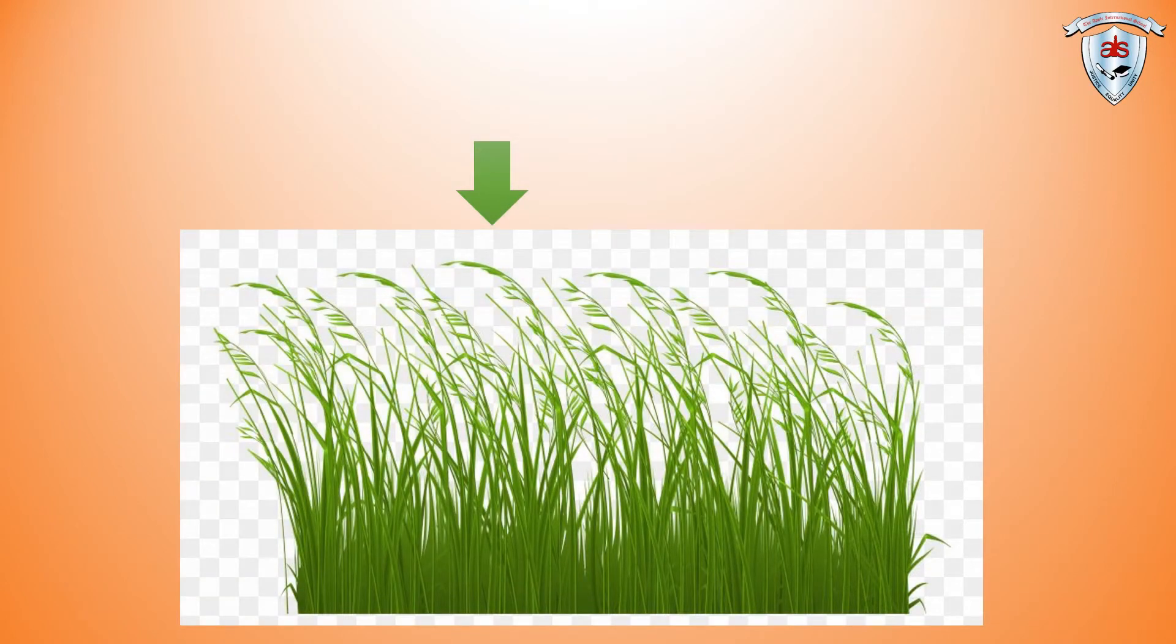Look at this picture, children. Can you tell me what is the name of this picture? Yes, you're right. It is grass. What is the beginning sound of grass? Well done. It is G.